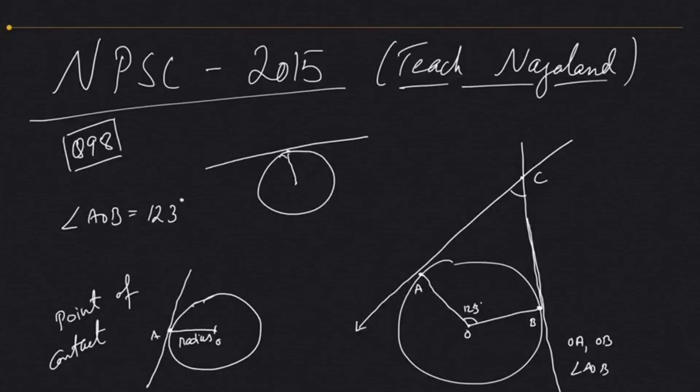Now from the point of contact, if we join to the center of the circle, it is also the radius. One theorem is that in class 10 you will find this theorem: the angle made by the tangent at the point of contact along with the radius is always 90 degrees. So this will be 90 and this will also be 90.